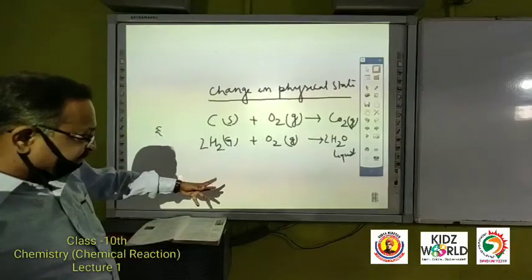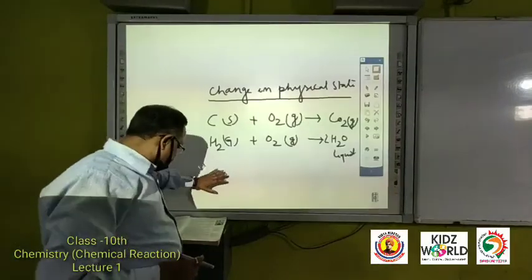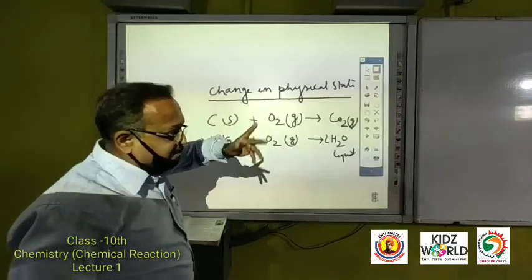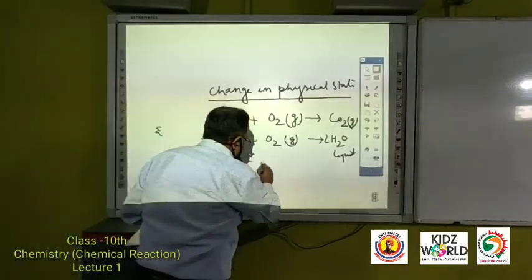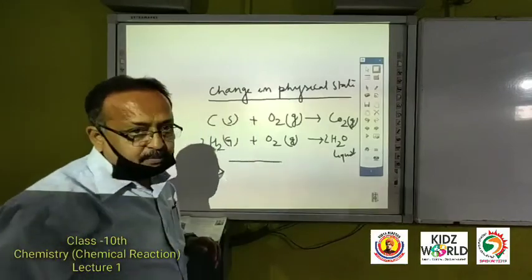So this is about the characteristics. Then we will learn about the chemical equation and the types of chemical reaction. In this class I will tell you about the chemical equation and types of chemical reaction.